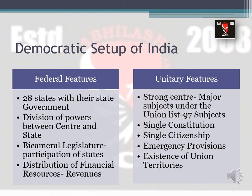Now let us look at the unitary features. A unitary setup is wherein there is only one government that rules the whole territory, making important laws on subjects mentioned in the union list such as foreign relations or currencies. In India, despite having different state and central governments, the constitution is only one — everybody follows the same constitution. Also, India has single citizenship, so whether you belong to Kerala or Maharashtra, everyone holds Indian citizenship.